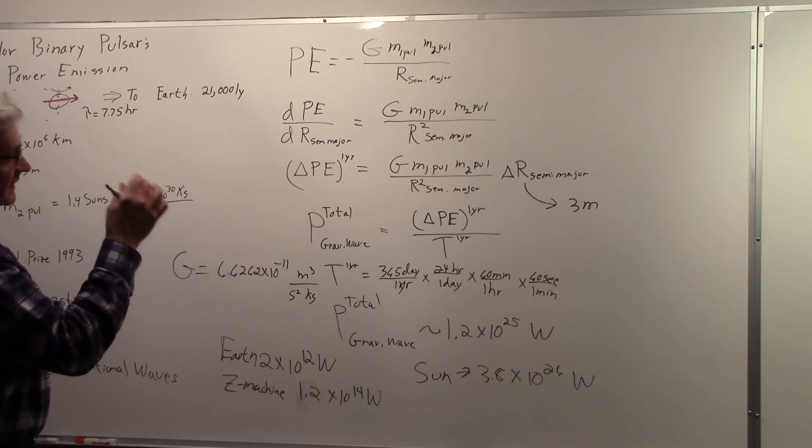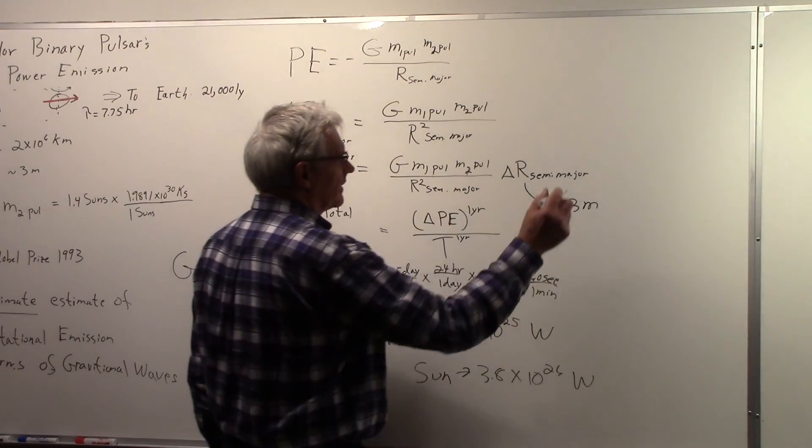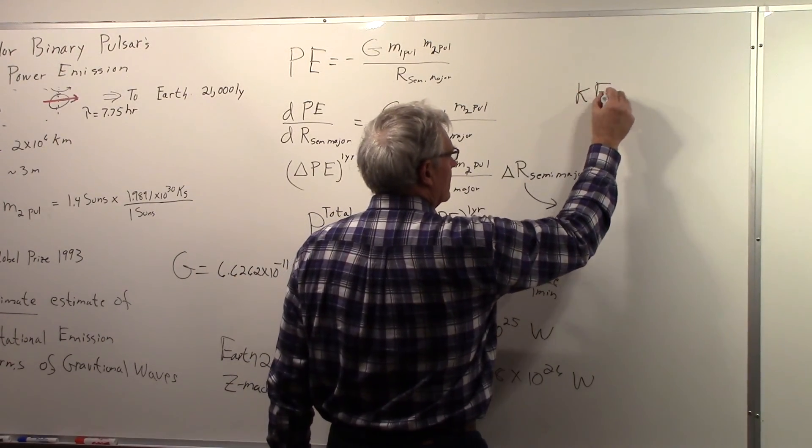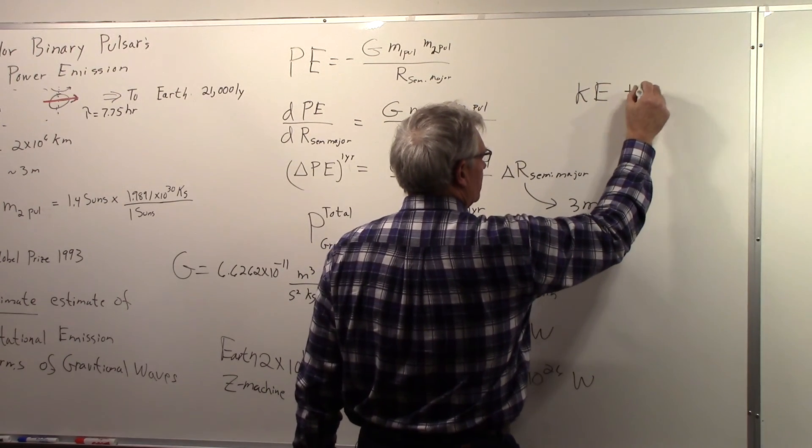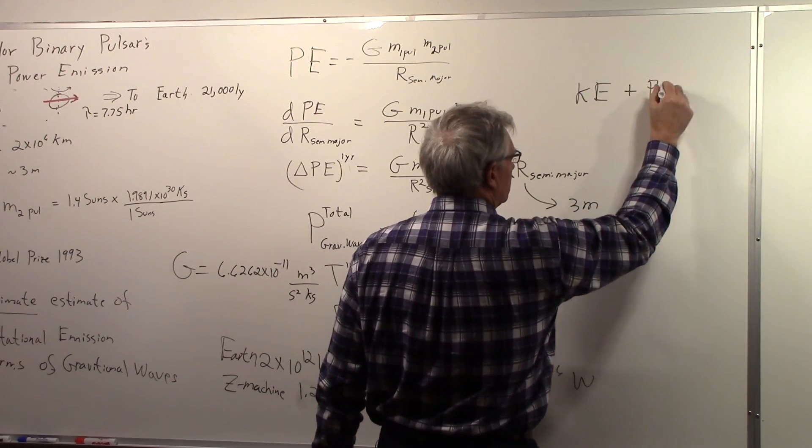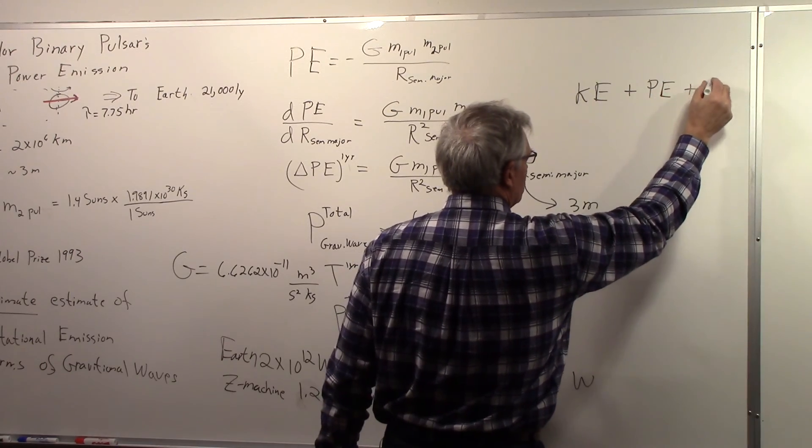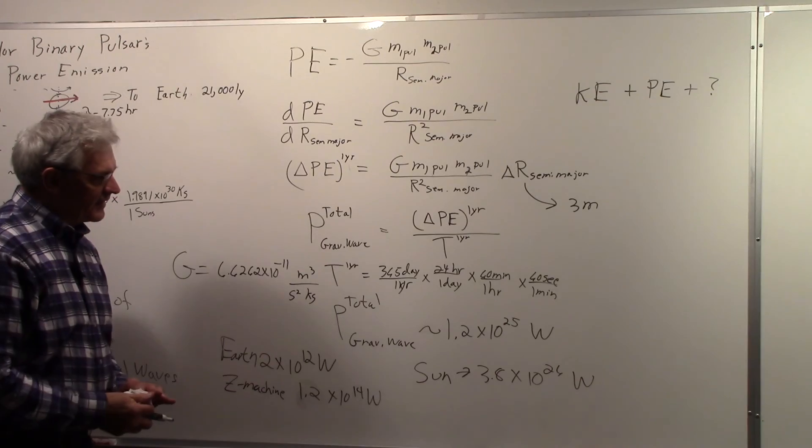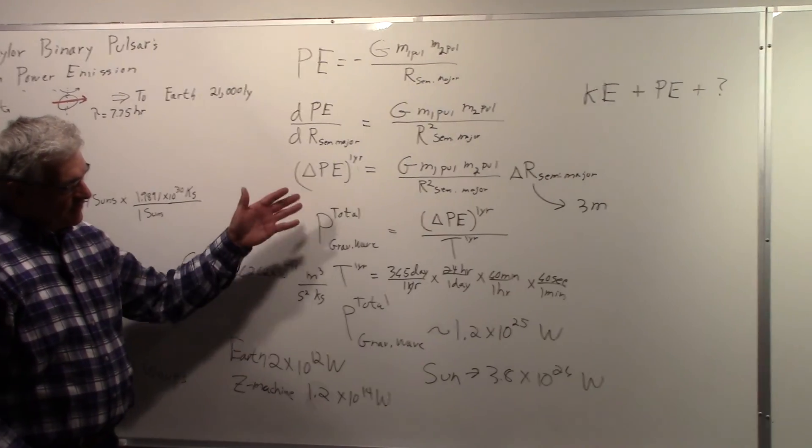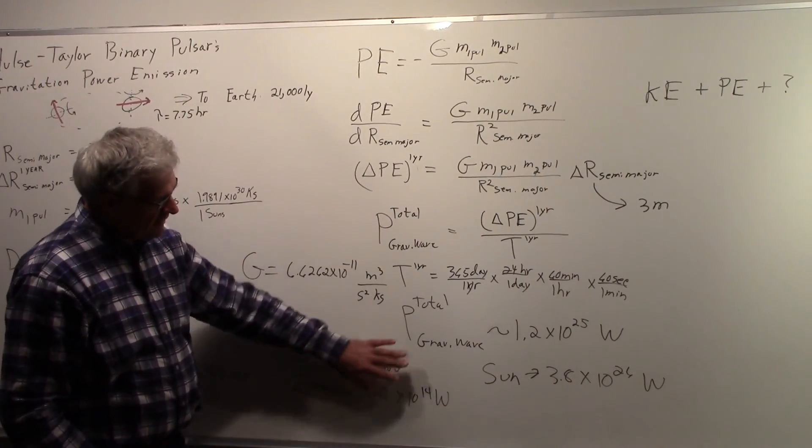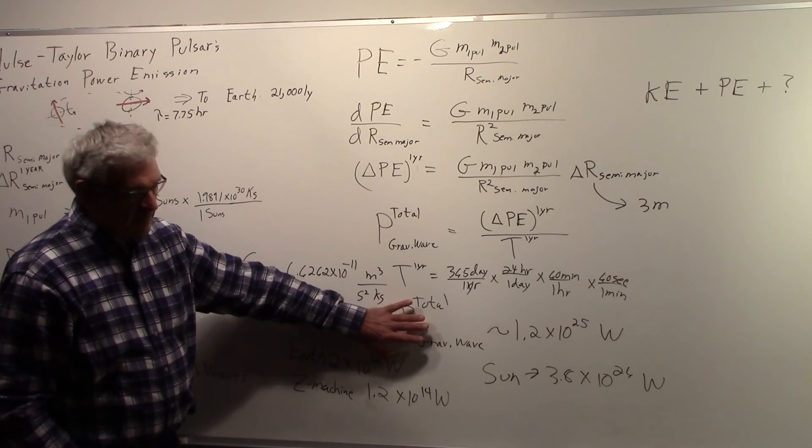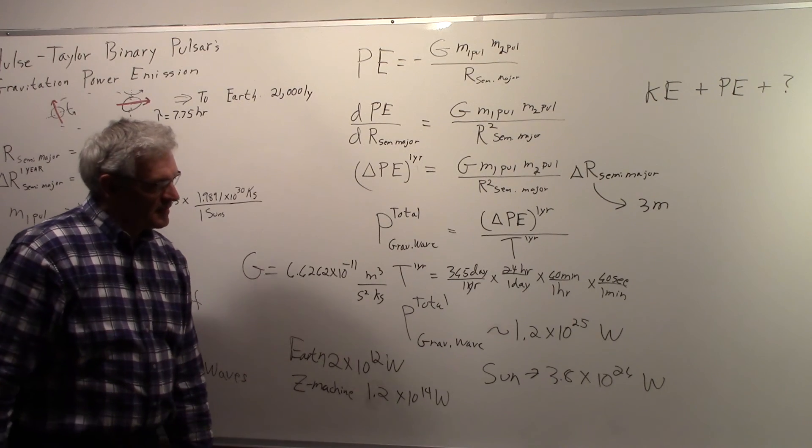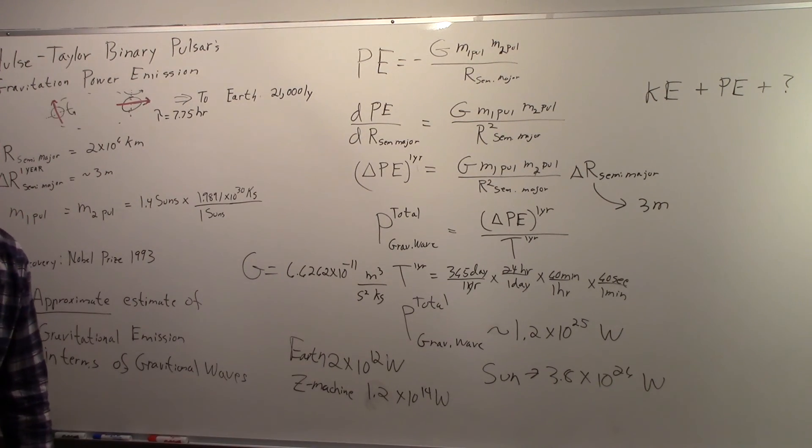And we only looked at this in terms of the potential energy, and maybe at some future date we'll include the kinetic energy plus the potential energy, plus maybe some other thoughts. But roughly speaking, because the orbit is decaying at 3 meters per year, the power emitted by the binary pair of pulsars is 1.2 times 10 to the 25 watts.